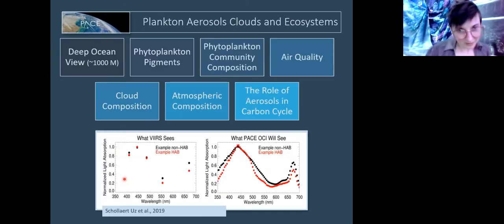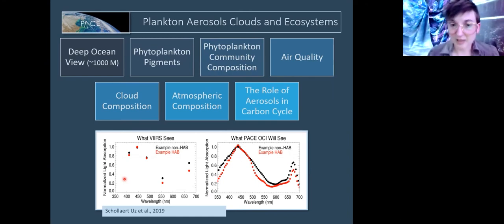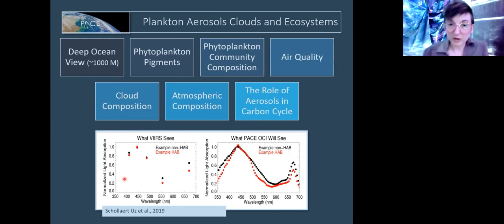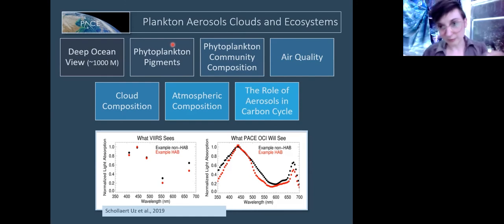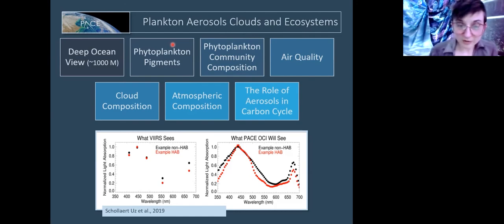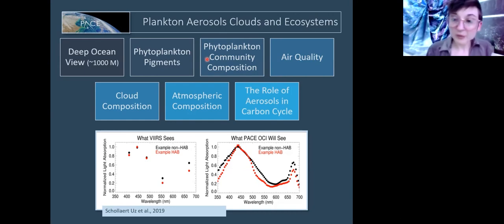It also will be orbiting the Earth in two days. Some things I think are really cool about it beyond the tech stuff is it will be able to see down to about a thousand meters in the ocean, which is incredible. Cloud composition, atmosphere composition, the role of aerosols—we'll be able to follow them through the carbon cycle and see how important they are. And then air quality as well. But what I'm most excited about is being able to distinguish with pigments, find different ratios. Each different plankton has different ratios of chlorophylls. We'll be able to use those unique fingerprint pigments, so to speak, to identify who's there and when and in real time. So it's really quite exciting.